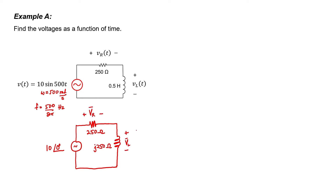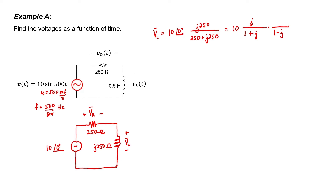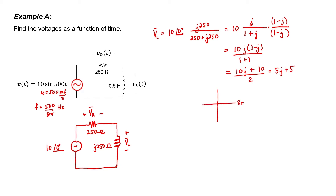Let's first find the phasor voltage V_L. We can use voltage division: the voltage across the inductor is just the voltage at the source times the ratio of the voltage divider. Dropping the angle-of-zero notation and dividing every term by 250, then multiplying numerator and denominator by the complex conjugate of the denominator to remove j from the denominator, we now know the phasor voltage in rectangular form. The number 5j + 5 is a point on the complex plane — we move a distance 5 along the real axis and 5 along the imaginary axis.